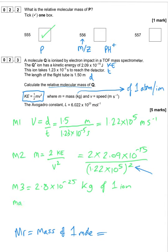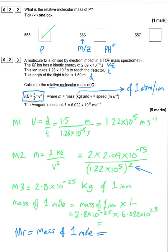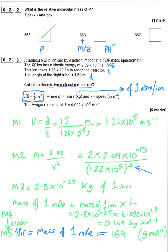To find the Mr, multiply the mass of one ion by Avogadro's number: 2.8 × 10⁻²⁵ × 6.022 × 10²³ = 0.169 kg/mol. Then multiply by 1000 to convert to g/mol, giving Mr = 169.